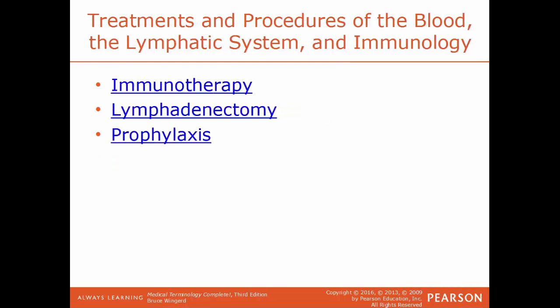Immunotherapy is the treatment of disease by giving substances that stimulate the immune response — making it work faster and harder to combat disease. Lymphadenectomy, also known as lymph node dissection, is the surgical removal of a lymph node. Prophylaxis is action or medication taken to prevent a disease — for example, taking anti-malarial medications before traveling to an area with high malaria rates is a prophylactic procedure.